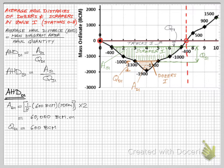From part B we know that Qd1 equals 600 bank cubic meters so we will get 100 meters average haul distance for the dozers.